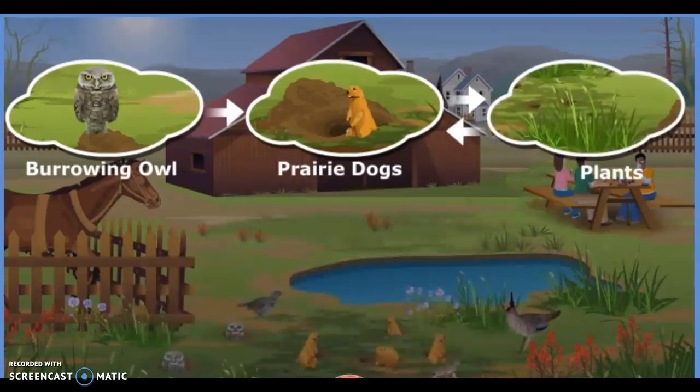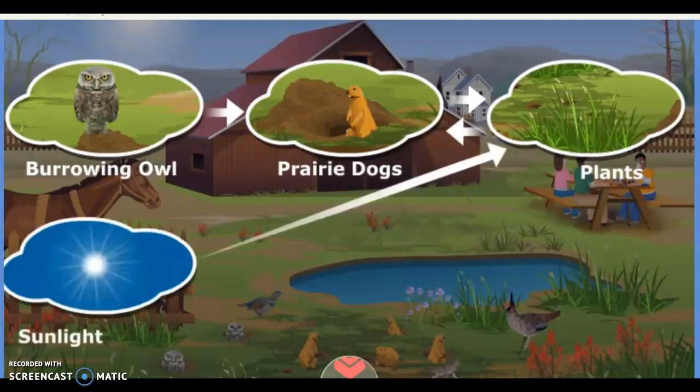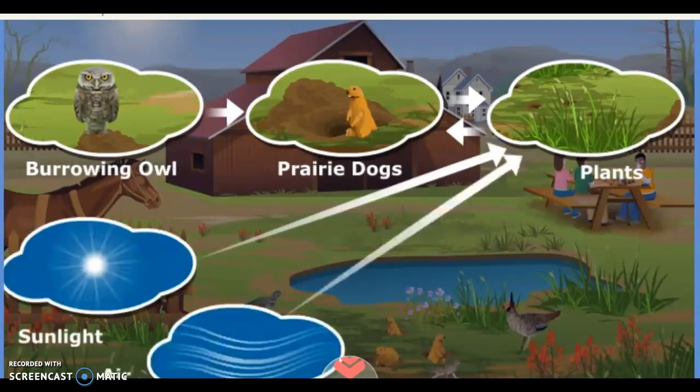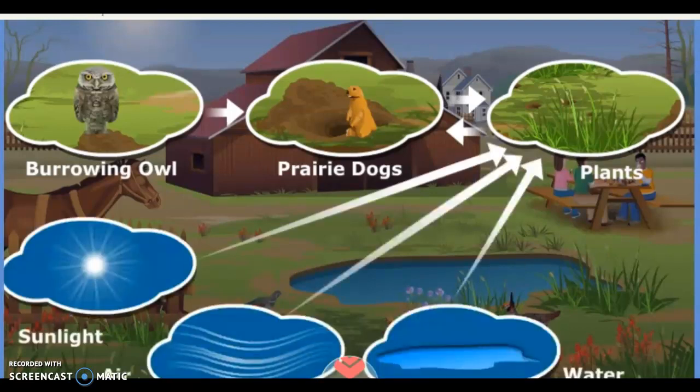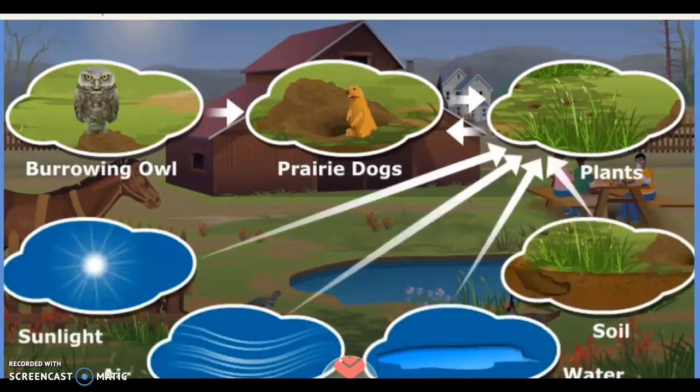Plants also depend on abiotic factors, such as sunlight, air, rain, and soil, to grow and to make their own food.